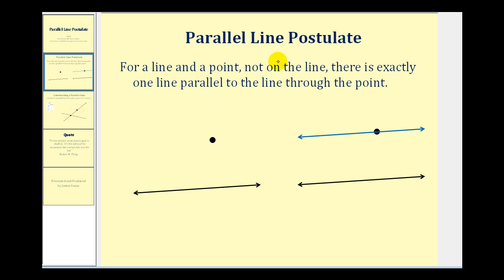The Parallel Line Postulate states that for a line and a point not on the line, there's exactly one line parallel to the given line through the point. So if here's our given line and here's the point, there's only one parallel line passing through this point — it would be this blue line here.